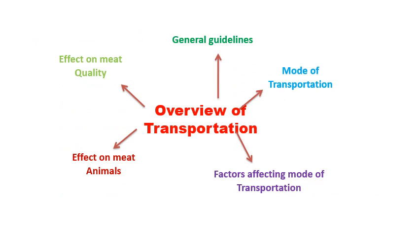Here we will see the overview of transportation and the different aspects we are going to discuss. Firstly, general guidelines — the basic guidelines to be followed for proper transportation and to fulfill legal requirements. Then the mode of transportation — different methods, their pros and cons. Next, factors affecting the mode of transportation, followed by the effect of transportation on meat animals, and finally the effect of transportation on meat quality.